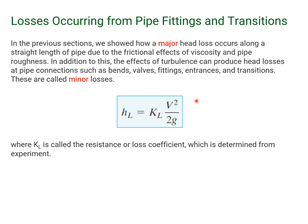In a similar manner, we can define an equation that looks a lot like the major losses. The head loss is given by this factor K sub L times V squared over 2G, where V is the velocity. K sub L is referred to as the resistance or loss coefficient, which is determined from experiment.